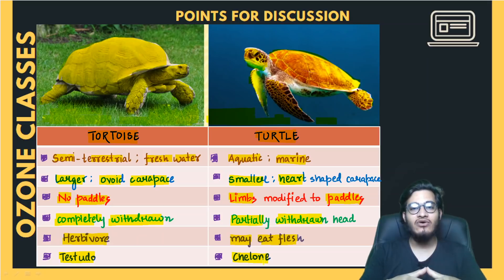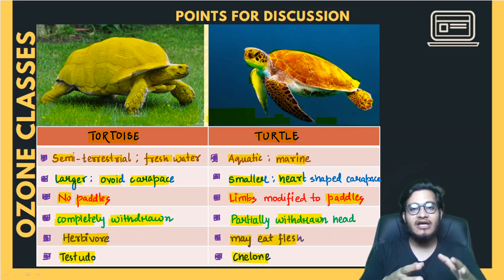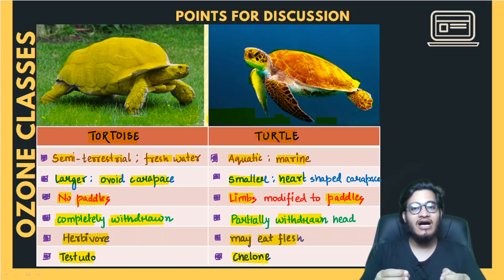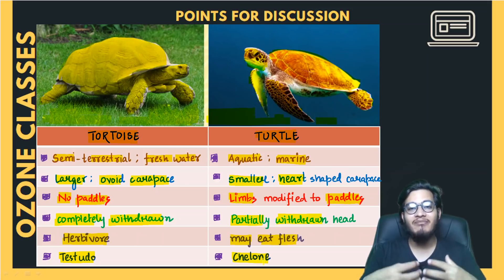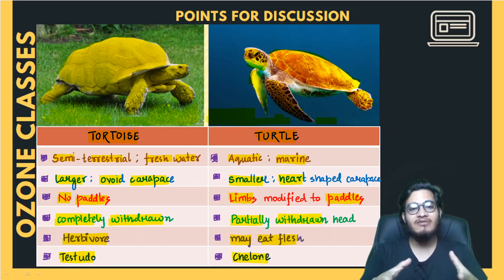There are many important differences between various animals that you might not know — for example, between Bufo and Rana, that is toad and frog, there are many differences. Similarly, between crocodile, alligator, and gharial, there are also many differences. All these are very important for us to understand. If someone from maths doesn't know the difference between turtle and tortoise, that's okay — but if we don't know, that is a big deal, because we are biologists and it's our responsibility to know these things.